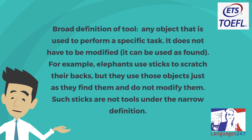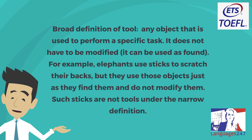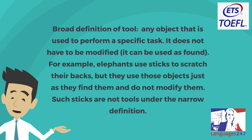Broad definition of tool: any object that is used to perform a specific task. It does not have to be modified — it can be used as found. For example, elephants use sticks to scratch their backs, but they use those objects just as they find them and do not modify them. Such sticks are not tools under the narrow definition.